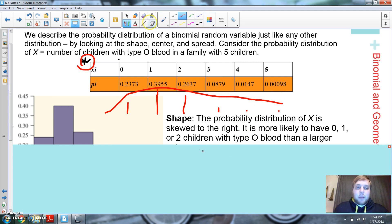I would say this is skewed to the right. More likely to have a 0 or 1 or 2 with O blood than to have like 4 or 5. So that would be how I'd describe it. Remember, we've talked about describing things in chapter 1.